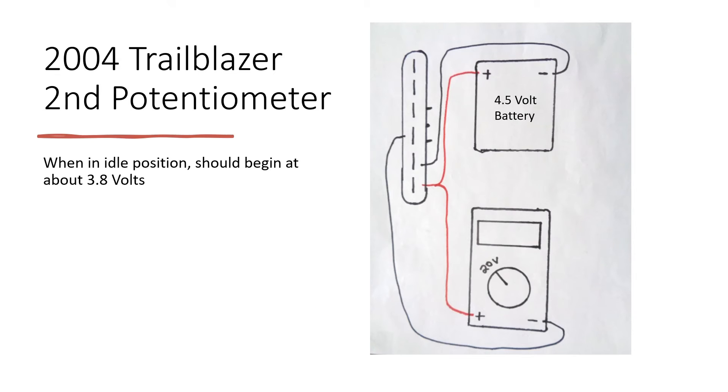In its idle position it should start at about 3.8 volts and as you press it down it should stop at about 4.3 volts. Remember you are checking for both spikes and glitches during these tests.